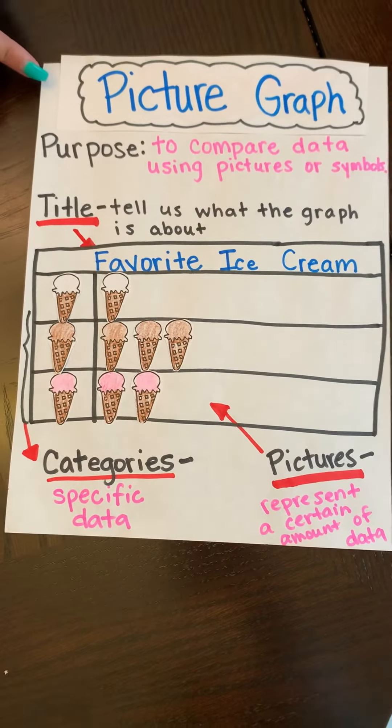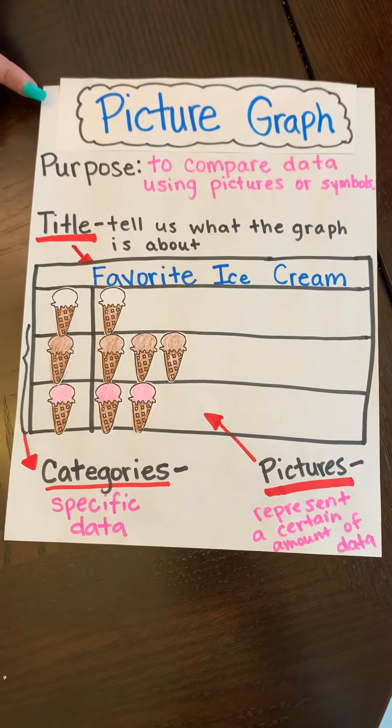So those are some vocabulary words. Now I'm going to be explaining this anchor chart, and this anchor chart is focusing on a picture graph. The purpose of this picture graph is to compare data using pictures or symbols.